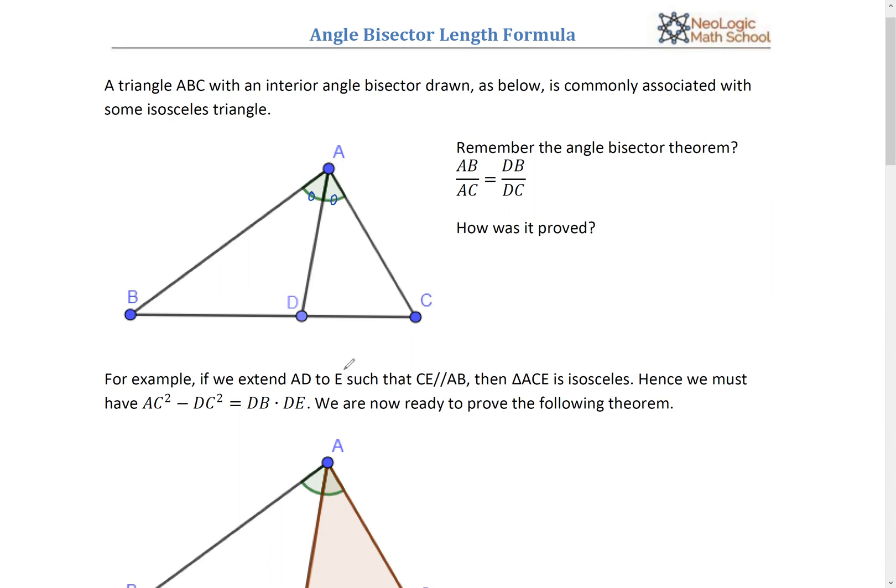And then I think everybody knows the angle bisector theorem, which says AB divided by AC equals DB divided by DC, a very nice pair of ratios.